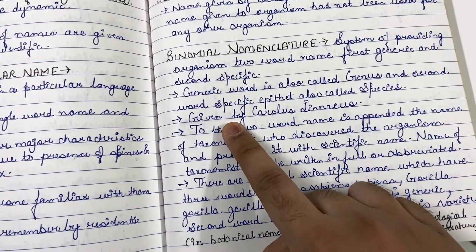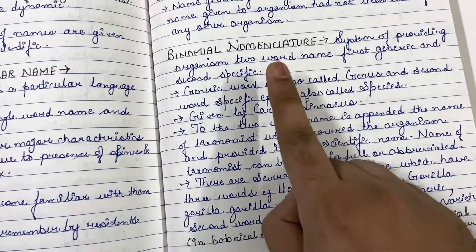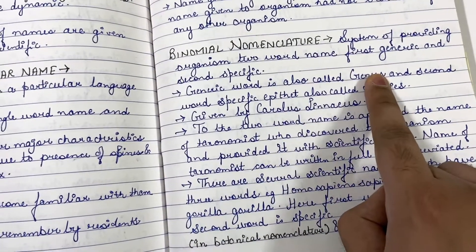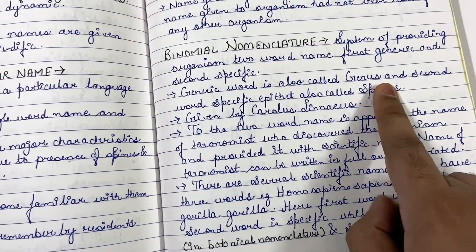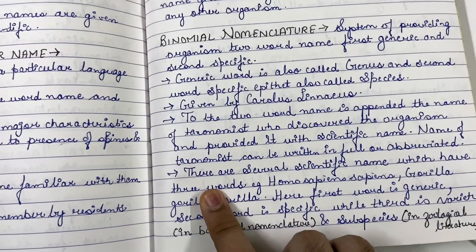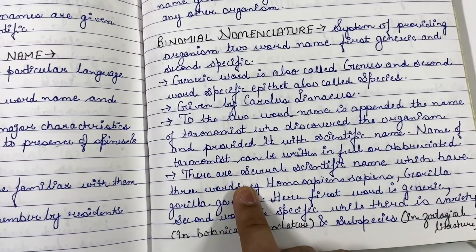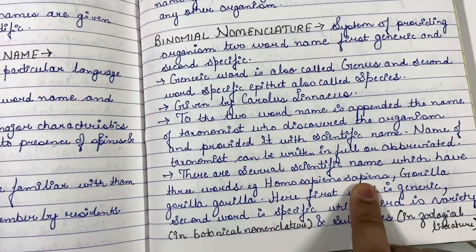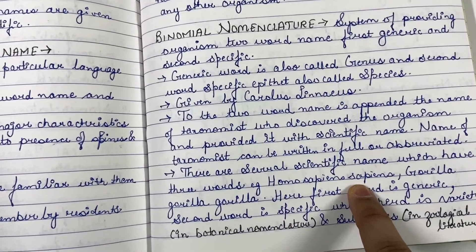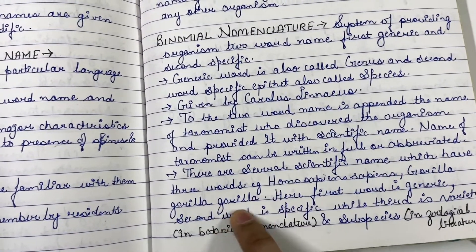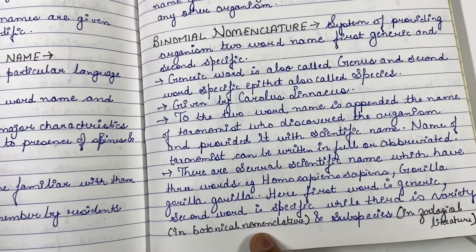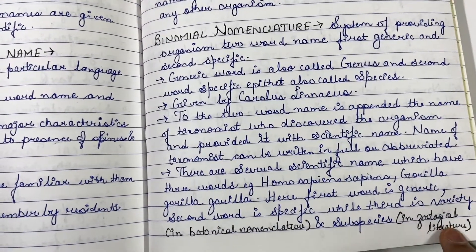Binomial nomenclature was given by Carolus Linnaeus. In binomial nomenclature, the first word tells us about the genus and the second word tells us about the species. In certain organisms we also give three-word names — for example, Homo sapiens sapiens and Gorilla gorilla gorilla. When a third word is present, it tells us about variety in the case of plants, or subspecies in the case of animals.